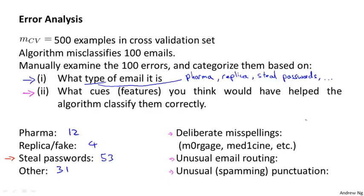I would manually go through and, let's say, find five cases of deliberate misspellings, 16 of unusual routing, and 32 of unusual punctuation. If this is what you get on your cross-validation set, it really tells you that deliberate misspellings may be a sufficiently rare phenomenon that it may not be worth a lot of time trying to write algorithms to detect that. But if you find a lot of spammers are using unusual punctuation, then maybe that's a strong sign that it might actually be worth your while to spend the time to develop more sophisticated features based on punctuation.